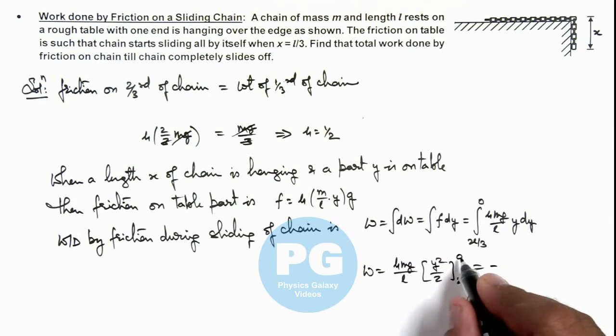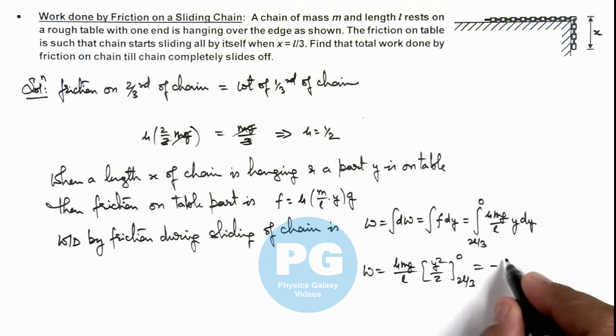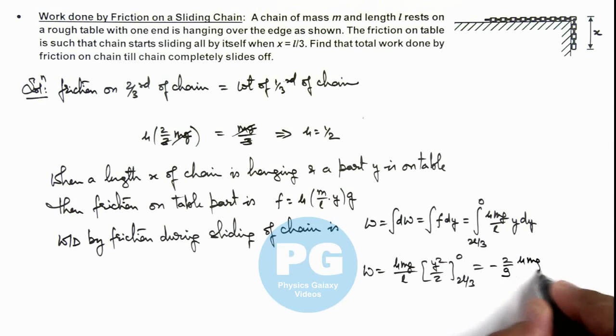Minus, because lower limit is 2l/3 so this will be 4l squared by 3, so this will be minus 2/9 μmgl.